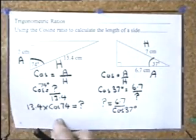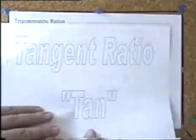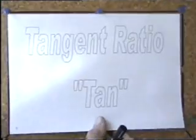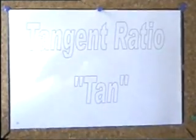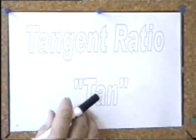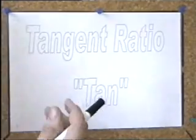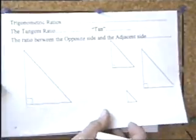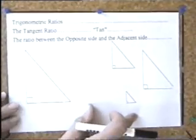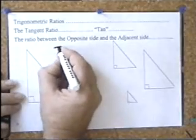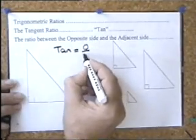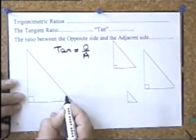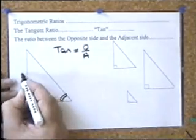That's two of the trig ratios. Let's look at the third trigonometric ratio — the tangent ratio, or tan for short. We need a right angle triangle, and the tangent ratio is the connection between the opposite and the adjacent. In this triangle, if I'm working with that angle, this will be the opposite and this will be the adjacent.